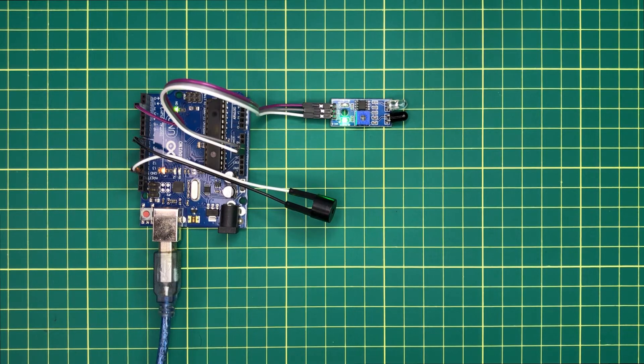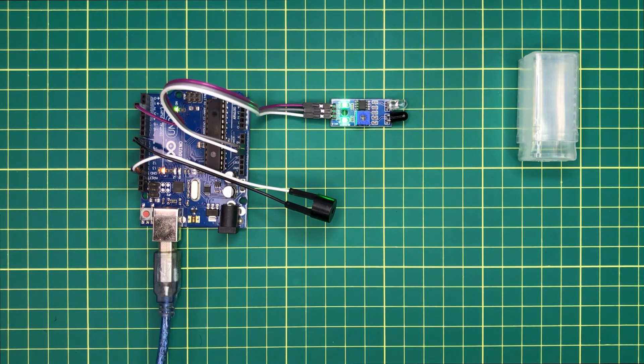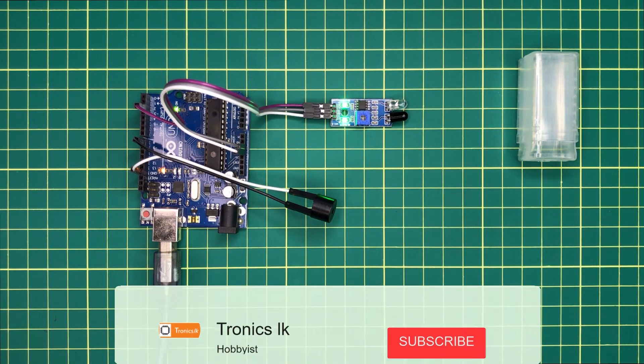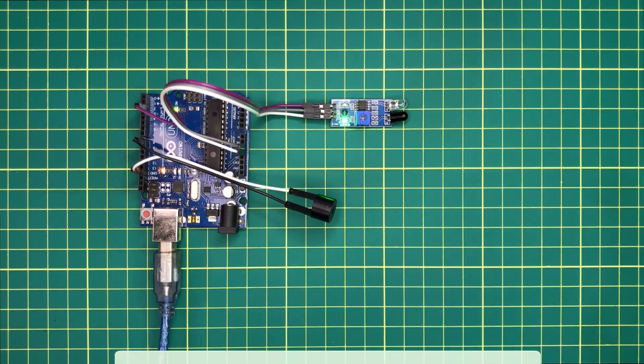Ok, now keep an object in front of the sensor and observe. Yes, you can see that it will turn on the buzzer when we keep the object near the sensor and it will turn off when we take it away.